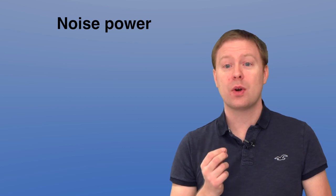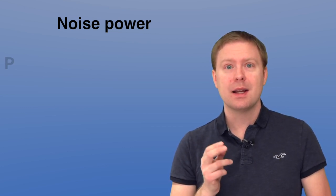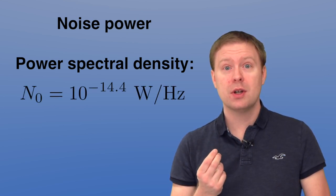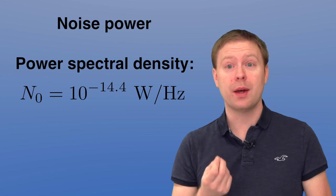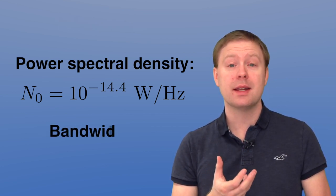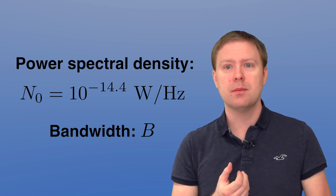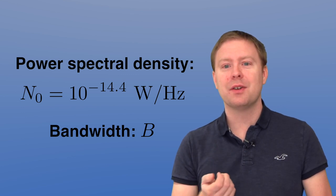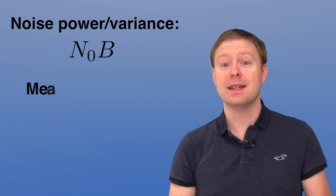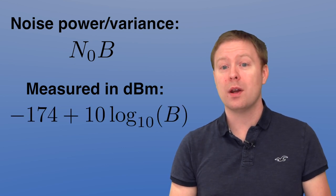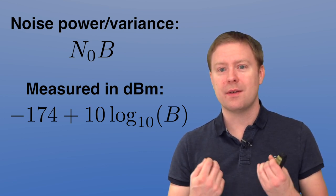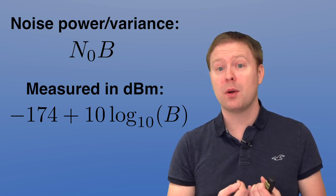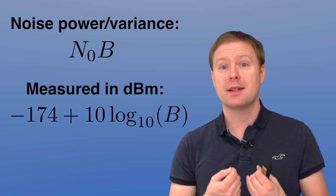The noise power is also incredibly small. You can compute it by taking the power spectral density of the noise measured in watts per hertz, and in room temperature this is typically something like 10 to the power of minus 14.4 watts per hertz, which is a small number. Then you should multiply that with the bandwidth, which might be say 10 megahertz in our system. So that's 10 to the power of 7 and you're still down at very very small numbers. For that reason we like to measure the noise variance in the dBm scale as well. So we just divide it with 1 milliwatt and we take the 10 log 10 out of it. Then the typical formula will be minus 174, which is a constant term coming from the noise power spectral density, and then plus 10 log 10 of the bandwidth.